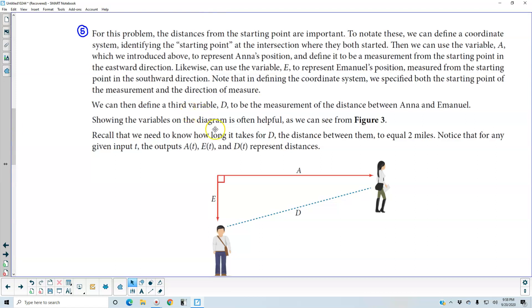Now, we can then define a third variable, which is D, and that represents the measurement of the distance between Anna and Emanuel. Showing the variables on a diagram is often very helpful. You can see that in Figure 3.